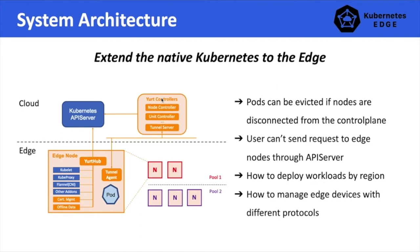Here is the system architecture of OpenYurt. As we can see, to have an OpenYurt cluster up and running, we only need to deploy several controllers on cloud nodes, and on each edge node we only need to deploy YurtHub and the YurtTunnel agent. In addition, we provide a command line tool, YurtCTL, to help manage an OpenYurt cluster. By simply running YurtCTL convert, all the above components will be automatically deployed.